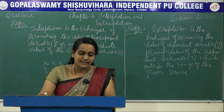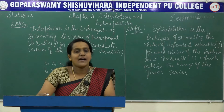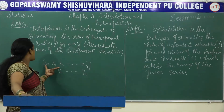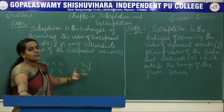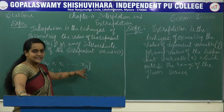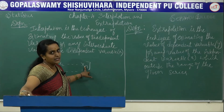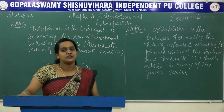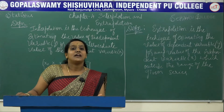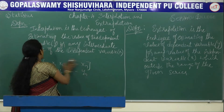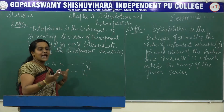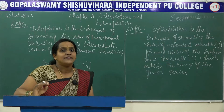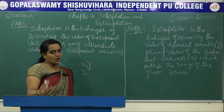For any value of X, if you want to calculate the Y value within the portion between X0 and Xn, that is called Interpolation. Interpolation means calculating the dependent variable Y for any value in between X0 to Xn. If the value is outside that range — say Xn+1 or Xn+2 — then calculating Y for such a value is called Extrapolation.